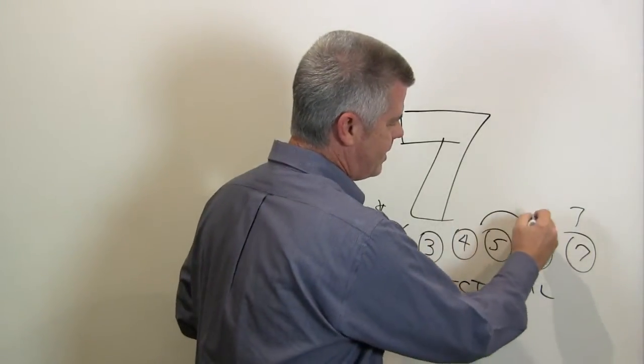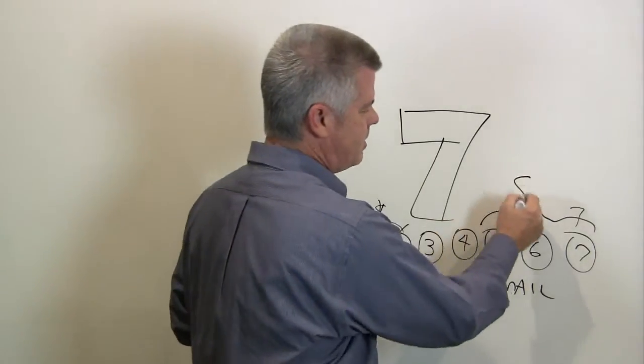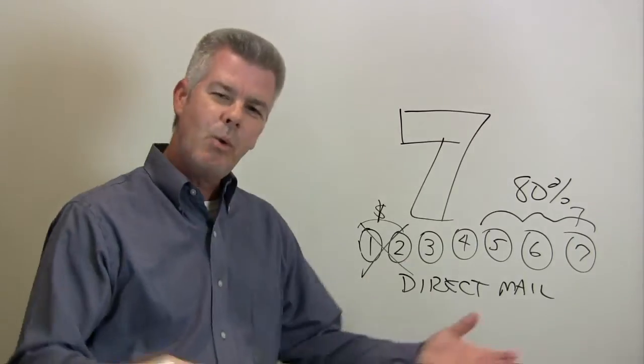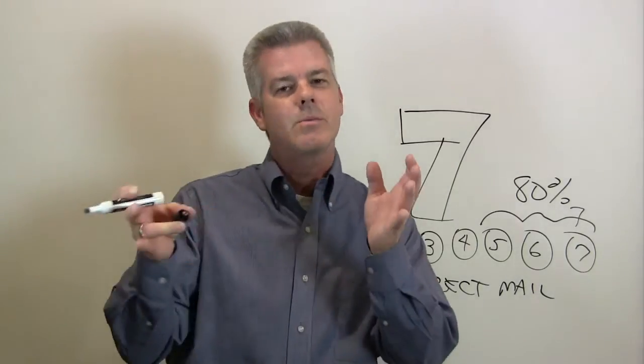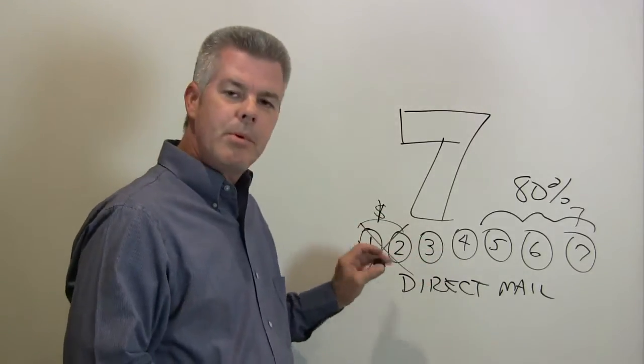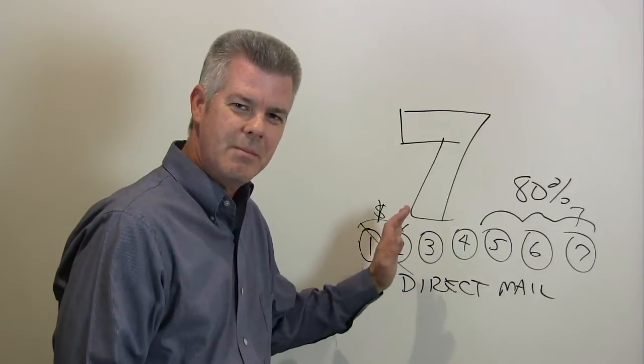Now why does that happen? Well that's what the rule of seven is really all about. What it tells us is that people don't really know you the first couple of times that you've hit them.